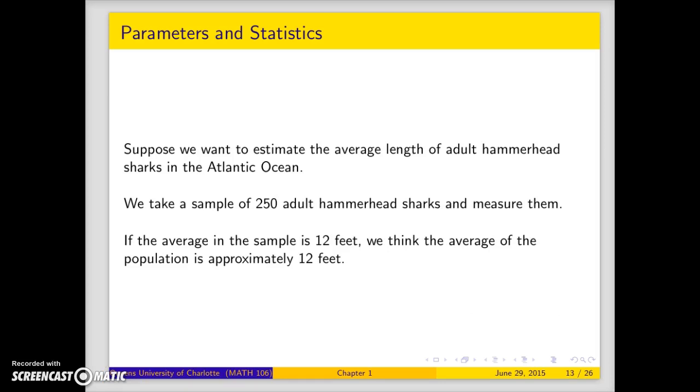Suppose we take a sample of 250 adult hammerhead sharks and measure them. And we want to estimate the average length of all hammerhead sharks in the Atlantic Ocean. So, we sample 250. And if we find the average in the sample is 12 feet. That is x bar, the sample mean. That's our best guess for the population mean mu. So, our estimate for the population mean would be 12.